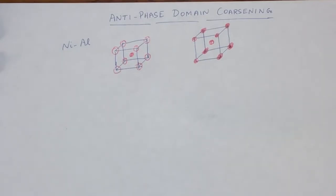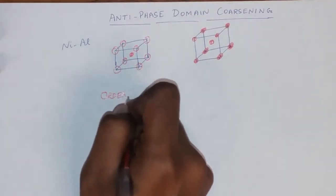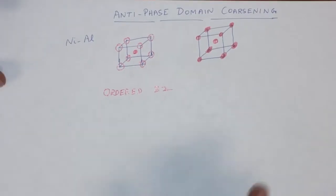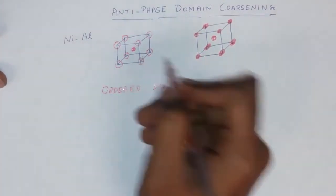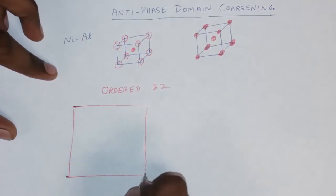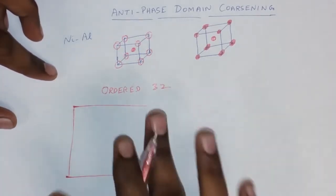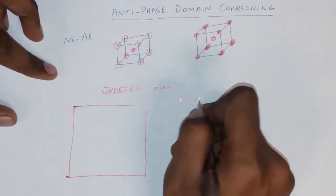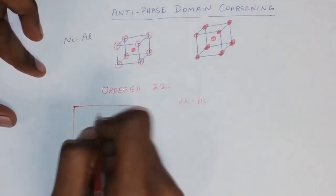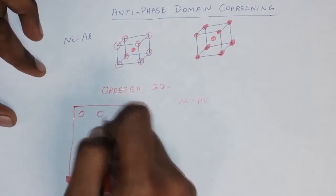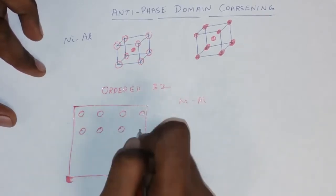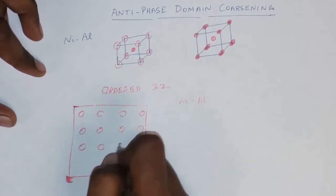I also mentioned that it is an ordered B2 structure. The reason I mention this is because when I say that, let me go ahead and draw it out. So let's say this top layer represents the very first layer of a nickel-aluminium alloy. And in this nickel-aluminium layer, the lattice representation is such that the aluminium occupy the corner positions.